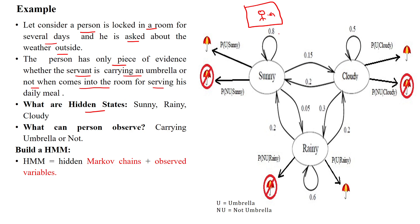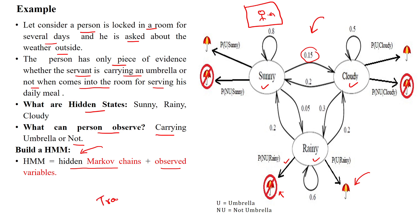From the state transition diagram, the hidden states are sunny, cloudy, and rainy. State transition probability values and emission probability values are also given. For rainy, we assign an emission probability value — during rainy, the servant may or may not carry the umbrella. The emission probability is thus: carrying an umbrella or not carrying an umbrella. A Hidden Markov Model is a combination of a hidden Markov chain and observed variables. The hidden Markov chain has transition probabilities and emission probabilities, and produces the observed values.